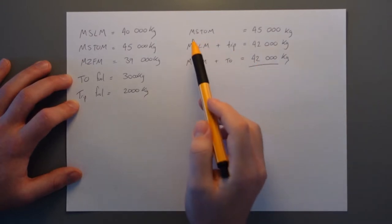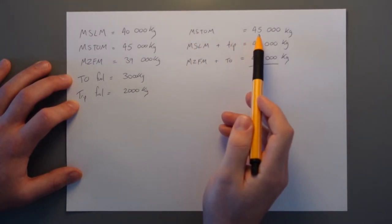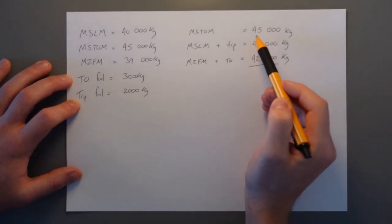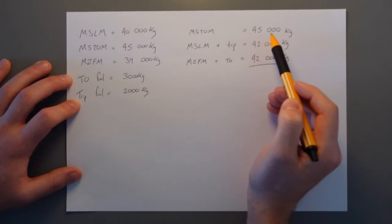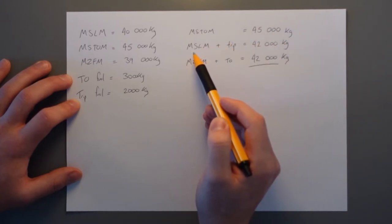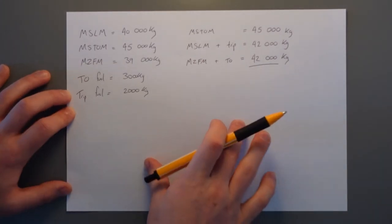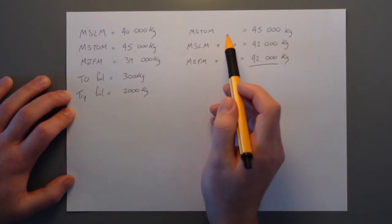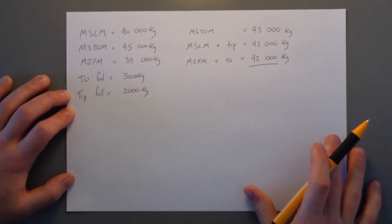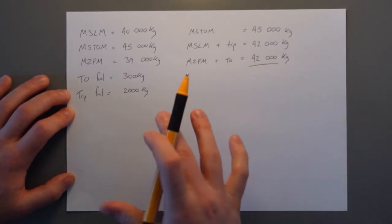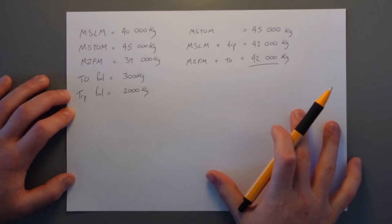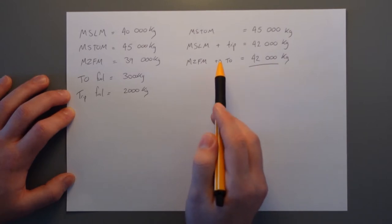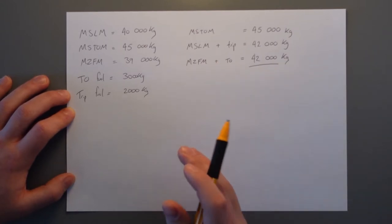So our most limiting figure — and our limit for today's flight — is 42,000 kg. This is because if we took off at the maximum structural takeoff mass of 45,000 kg, by the time we landed and burned our trip fuel, we'd only be down to 43,000 kg, which exceeds our maximum structural landing mass. Now, there are a lot of acronyms — MSTOM, MSLM, MZFM — but it's important to say them out in full. Always say 'maximum zero fuel mass,' not 'MZFM,' otherwise they just become confusing letters.